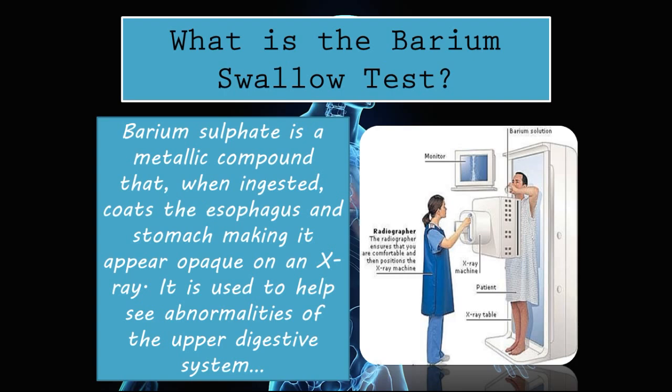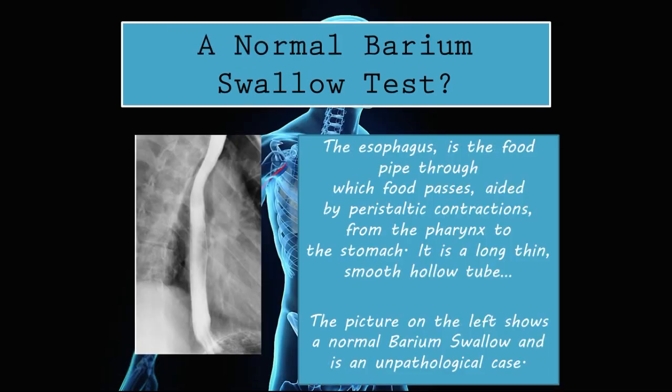Before we get into the pathological barium swallow tests, what does a normal barium swallow test look like? The esophagus is the food pipe through which food passes, aided by peristaltic contractions, from the pharynx to the stomach. It is a long, thin, smooth, hollow tube. The picture on the left shows a normal barium swallow — an unpathological case. This is what a typical normal barium swallow looks like.